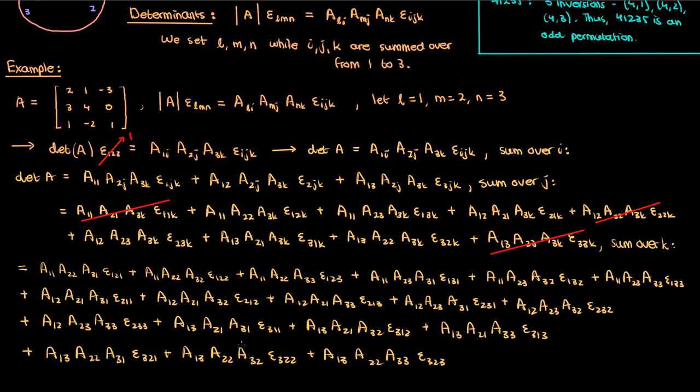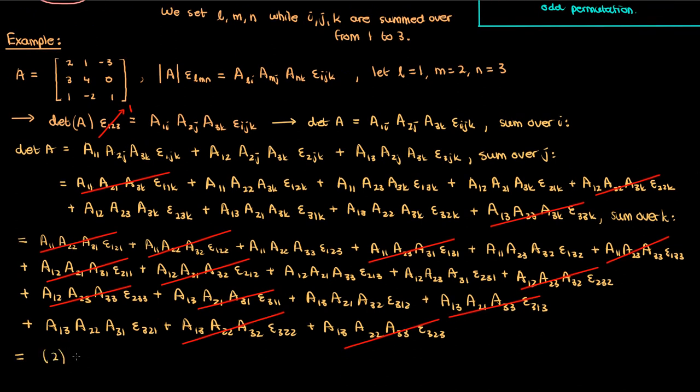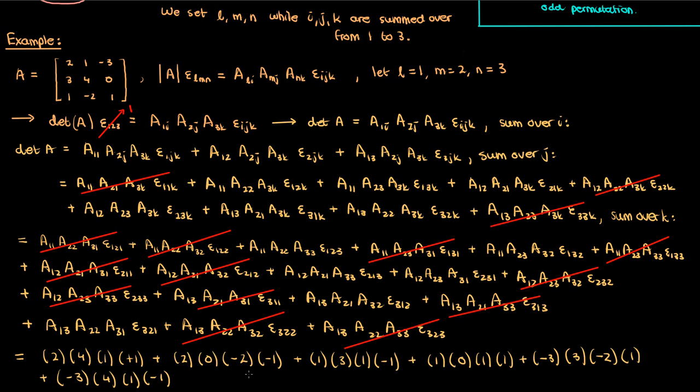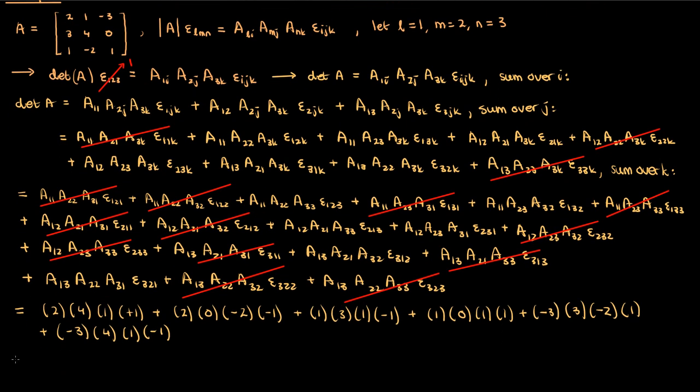The last thing to do is sum the k in each of these expressions from 1 to 3, and if we do that we end up with this monstrosity. Now fortunately we can use the fact that the Levi-Civita symbol is 0 for repeated indices to trim down this expression to something that's a bit more manageable. Now let's plug in all the values from the definition of the Levi-Civita symbol and from our matrix. When we do that this is what we get, and performing all the necessary multiplications gives us 8 plus 0 minus 3 plus 0 plus 18 plus 12, which means that the determinant of A is 35.